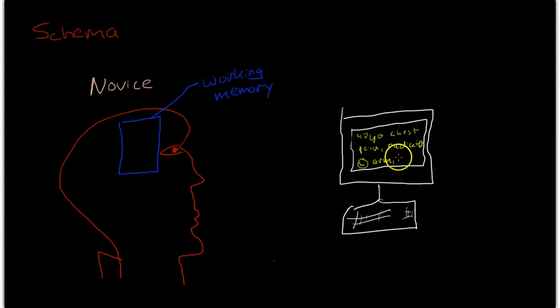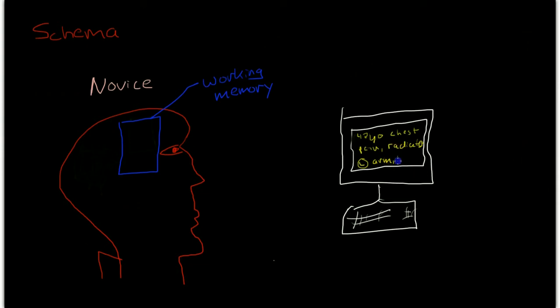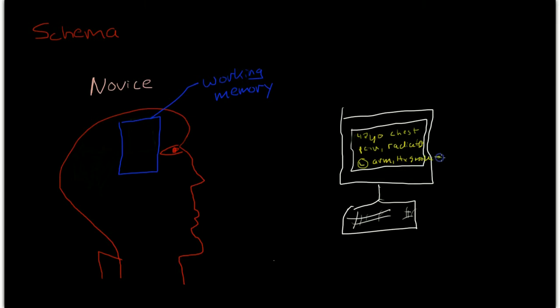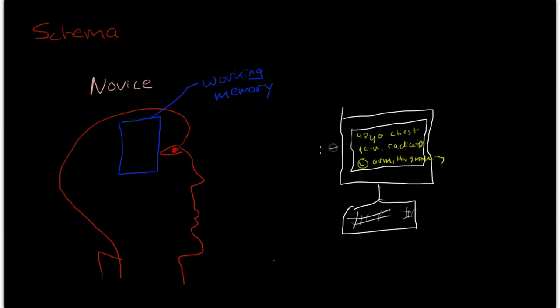So, the novice learner is learning that this is a 42-year-old with chest pain that's radiating to the left arm and has history of smoking. Now, the person is paying attention to this information, and you can see that the student is placing in working memory four different chunks of information.